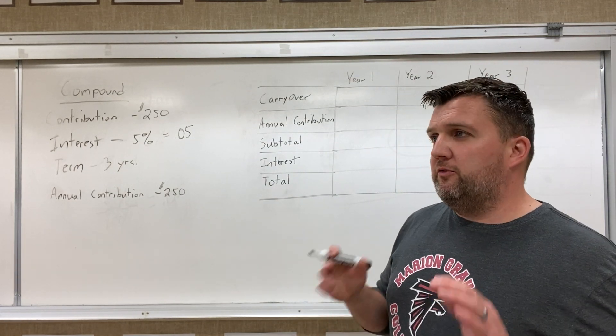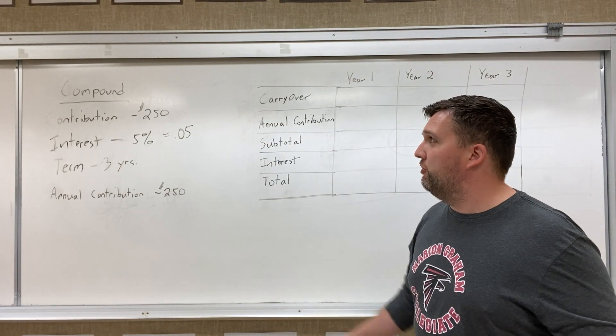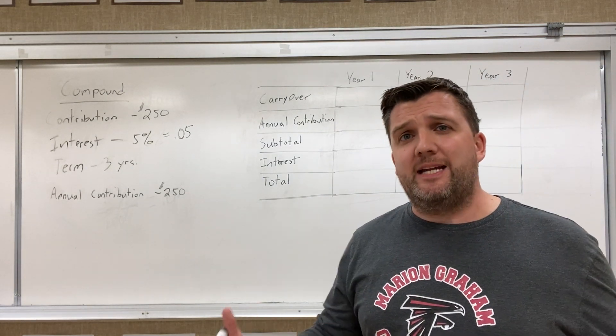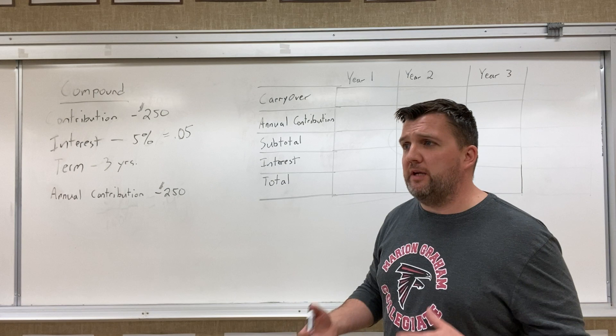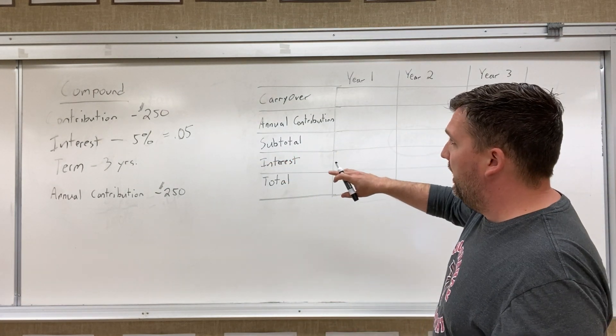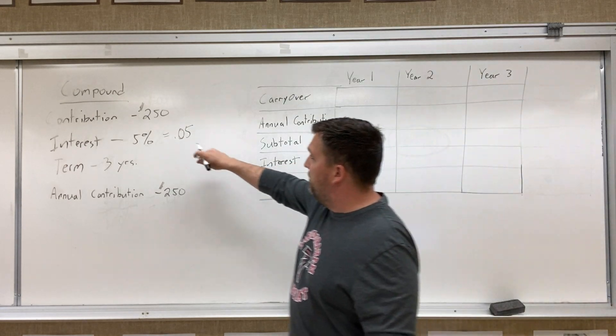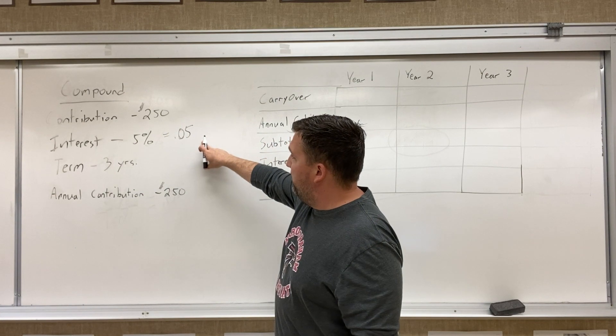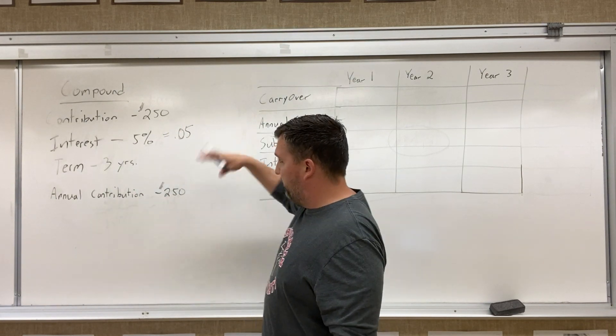Okay, so for this last one, we're gonna show how to do compound interest when you keep adding money to the account as you're going along. So we're gonna use the same numbers that we just did before on the other video, where we're having a $250 initial contribution, 5% interest on it, we're gonna do it for three years again.